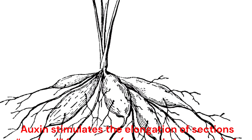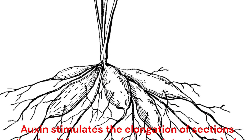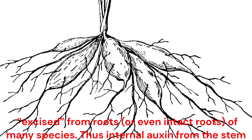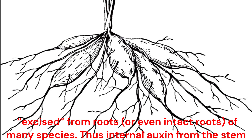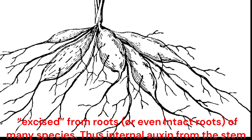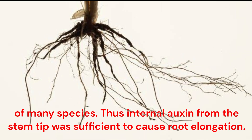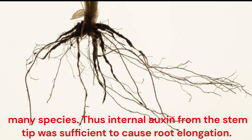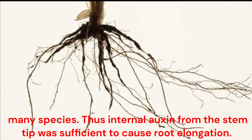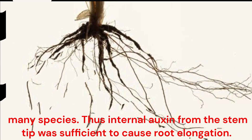Auxin's Role in Plants. Auxin stimulates the elongation of sections excised from roots, or even intact roots, of many species. Thus, internal auxin from the stem tip was sufficient to cause root elongation.